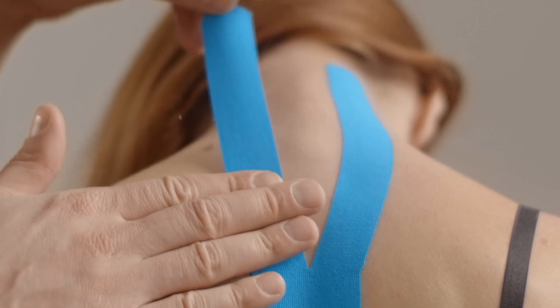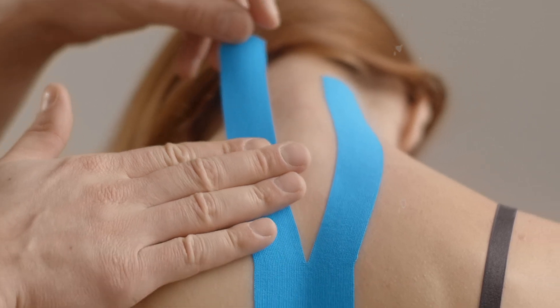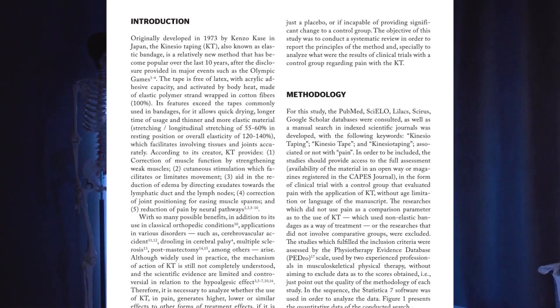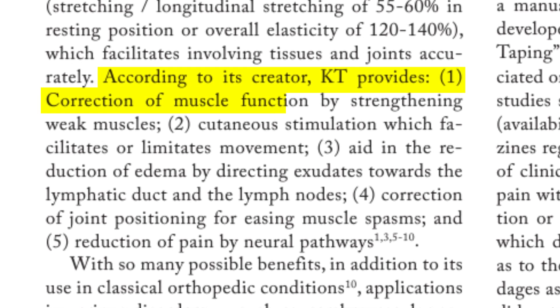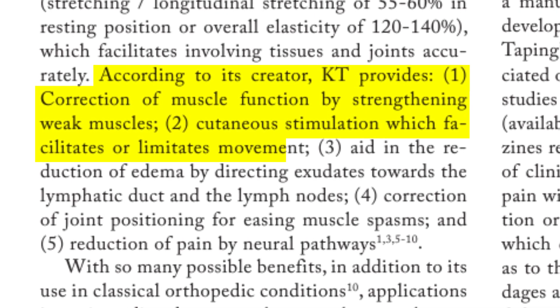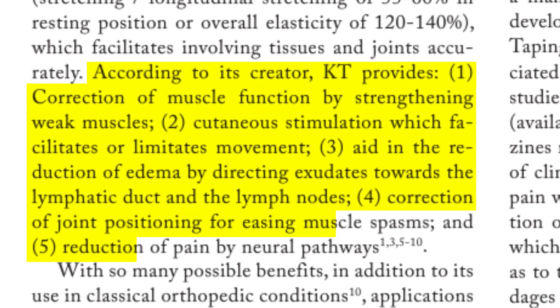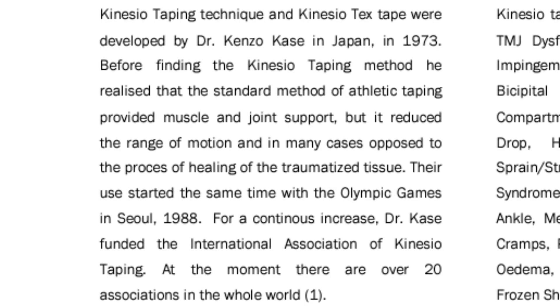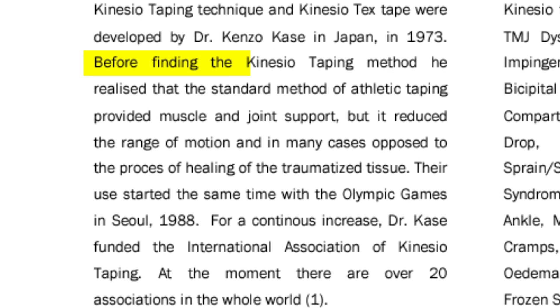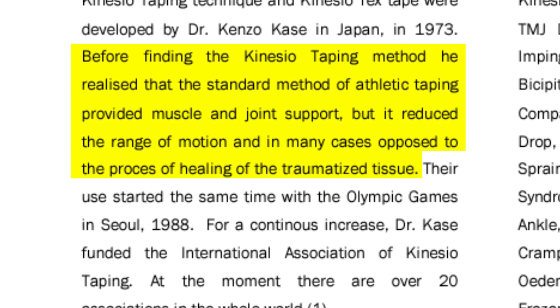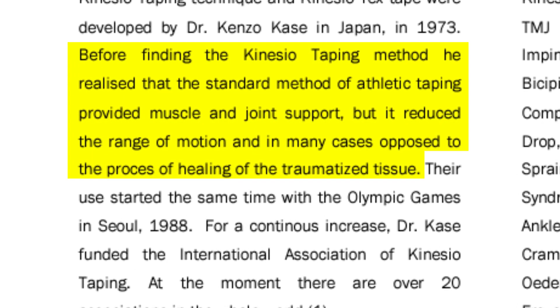Dr. Case noticed that by creating and placing elastic bands of tape over specific areas of the body, they acted as a new layer of skin and could help with reducing pain and swelling, and could even improve muscle activity and proprioception over the area they were applied. The tape was his brainchild after noticing that traditional rigid inelastic tape often impeded movement and performance of his athletes after this tape had been applied.